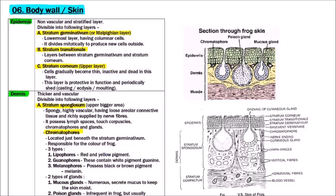Epidermis is the upper part. It is non-vascular and stratified, that is multilayered, and it is divisible into following layers. First one is stratum germinativum, second one is stratum transitional, and the third one is stratum corneum.